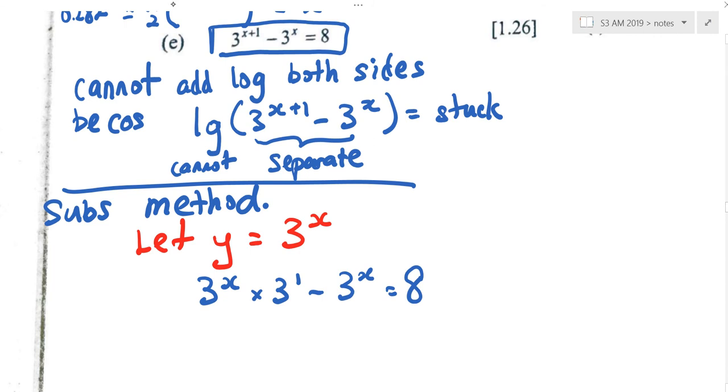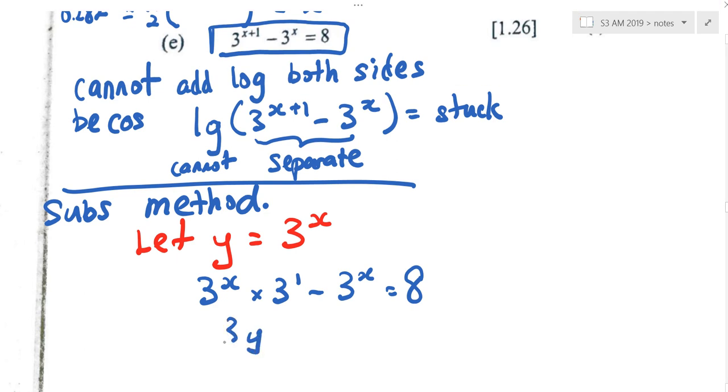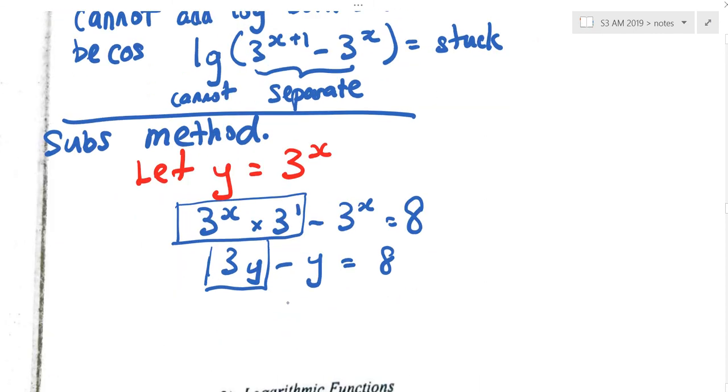So with this red color, what can I say about this? 3 power x is 3y, minus 3 power x, because the value is 3y minus y. Because this is 3y, right? Equals 8. What is 3y minus y? 2y equals 8. What is y? 4.